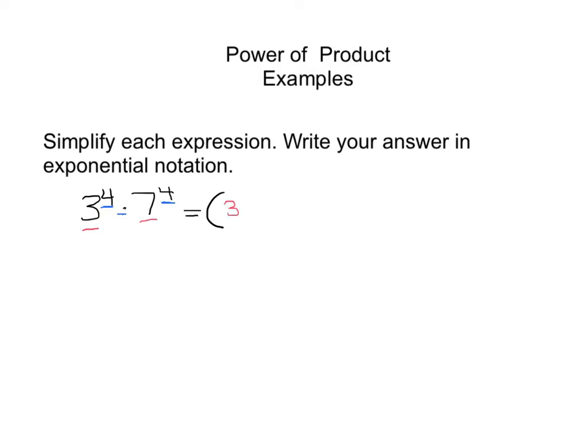So I'm going to take my 3, multiply it by 7, and I'm going to raise it to my common exponent, which was 4. So I have 3 times 7, which gives me 21, raised to the 4th. And that is my solution. Pretty simple. Let's do another one.